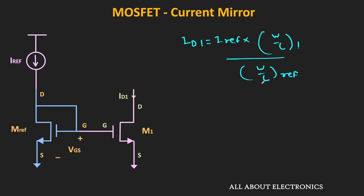For example, if the W/L ratio of M1 is 5 times that of the reference transistor, then ID1 will be equal to 5 times I_reference. In this way, we can generate copies which are a fraction or a multiple of this reference current. Typically in ICs, the length of each MOSFET is kept fixed and only the width is varied, and by changing this width we can change the W/L ratio.